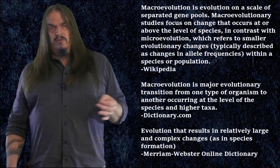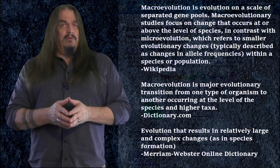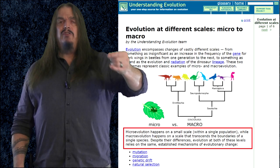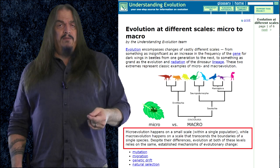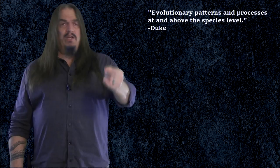Even though each of these is reasonably accurate, you can't always trust common dictionaries for lay people when they're trying to talk science. So sticking to strictly scientific sources, let's start with the University of California Berkeley's online primer called Evolution 101. Microevolution happens on small scale within single population while macroevolution happens on a scale that transcends the boundaries of a single species. Despite their differences, evolution at both of these levels relies on the same established mechanisms of evolutionary change. Speciation turns one species into two and is thus macroevolution.